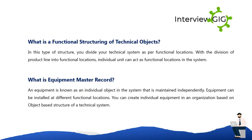In the functional structuring of technical objects, you divide your technical system as per functional locations. With a division of a product line into functional locations, individual units can act as functional locations in the system.